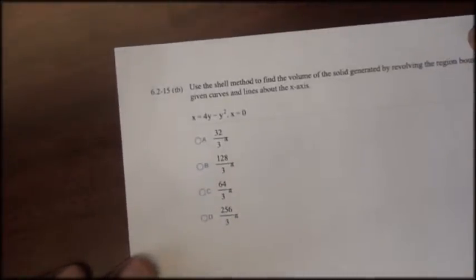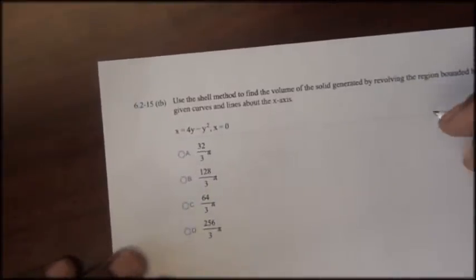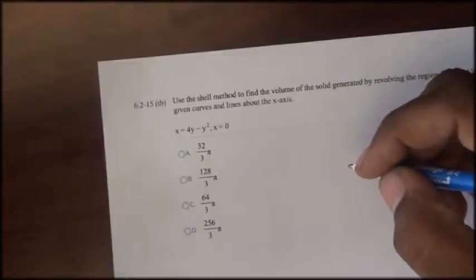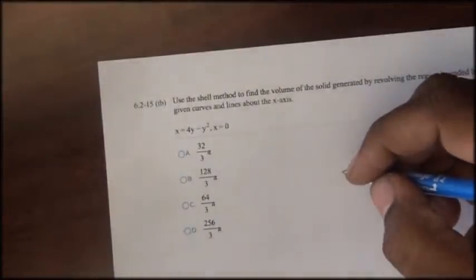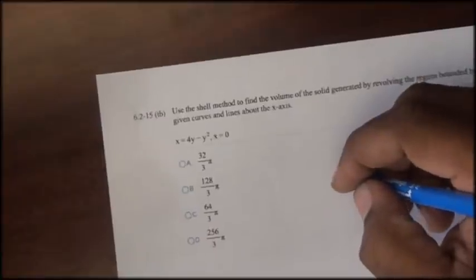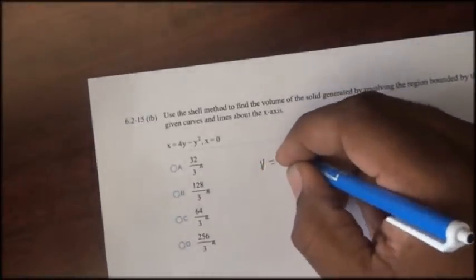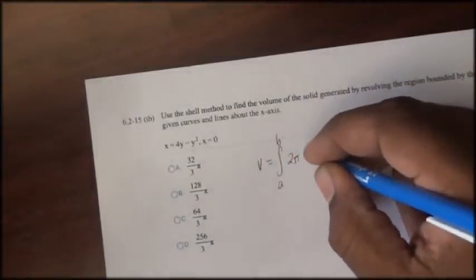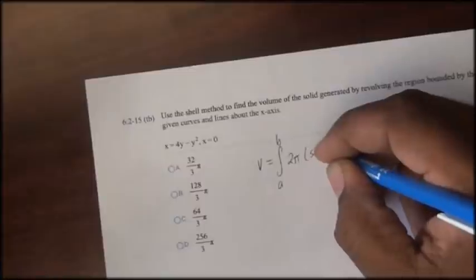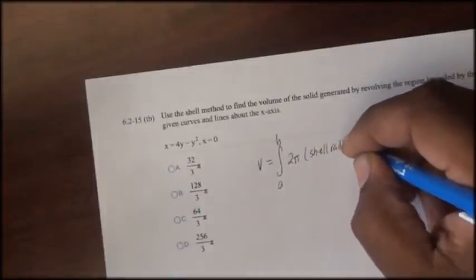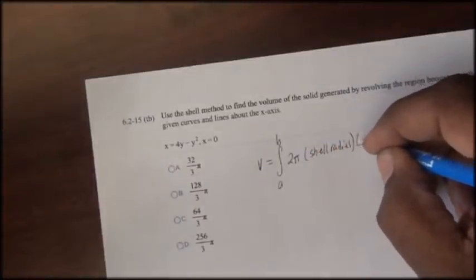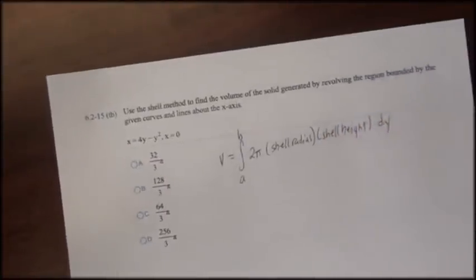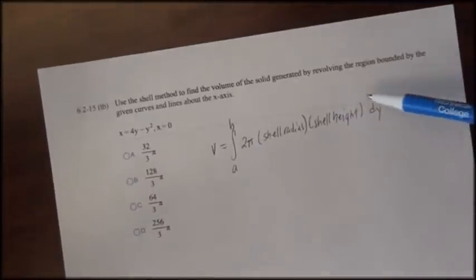So in an attempt to solve the problem, we'll use the shell method, and the shell method states that in order to find the volume of a solid revolution about a horizontal line, the volume is equal to the integral from a to b of 2π times the shell radius times the shell height dy. The limits of integration are on y.